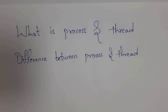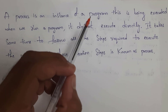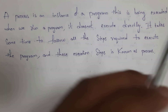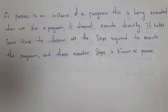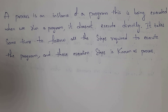First, I will explain what is a process. A process is an instance of a program that is being executed. A program which is being executed is known as a process. For example, I written one program and I am executing that program, so we call that program a process.